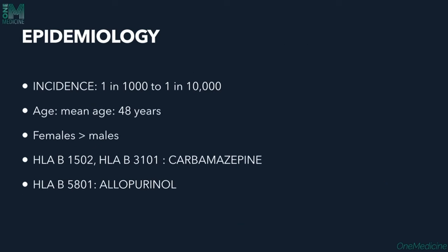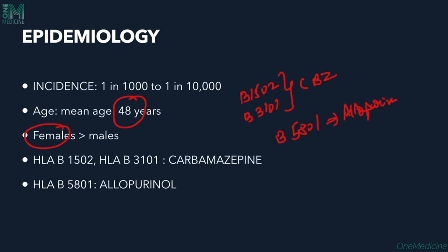Epidemiologically, DRESS affects 1 in 1,000 to 1 in 10,000 people. Mean age is around 40, and females are more prone. Certain HLA alleles increase susceptibility: HLA-B*1502 and B*3101 predispose to carbamazepine hypersensitivity, while HLA-B*5801 predisposes to allopurinol-induced DRESS.